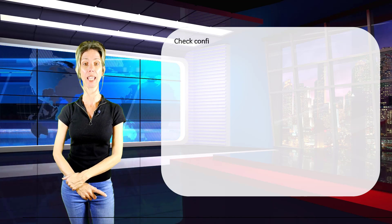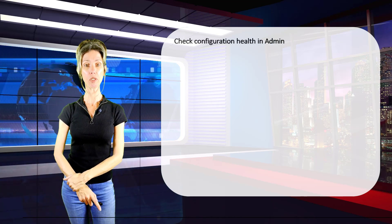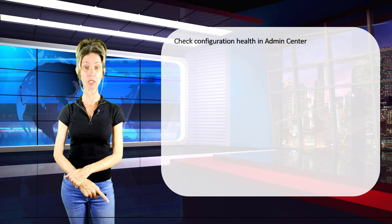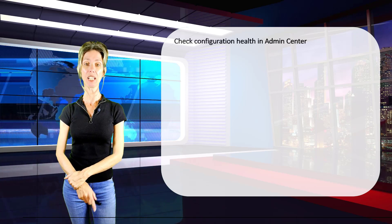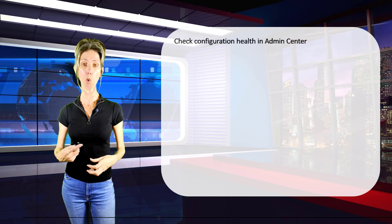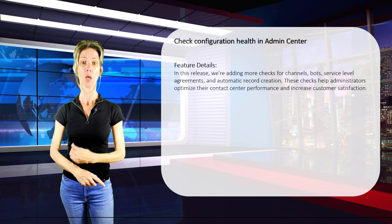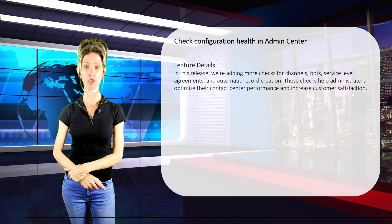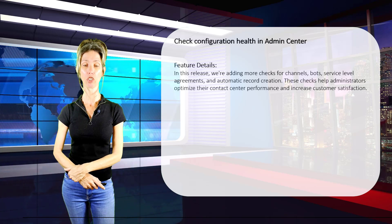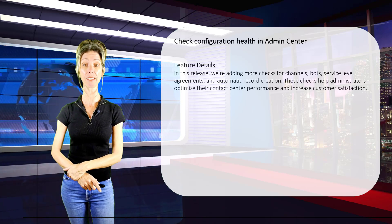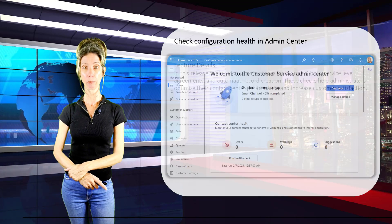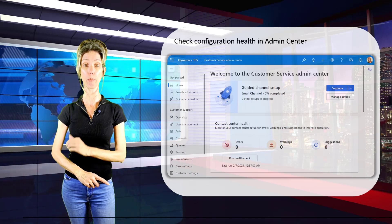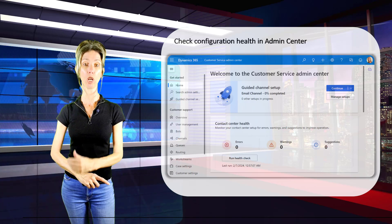The first one I wanted to talk about is the Check Configuration Health in the Admin Center. This was a feature that was actually added last Release Wave — I have to be honest, I kind of missed that one. In this release there are going to be more checks performed when you're running this configuration health check inside of the Admin Center of Customer Service. You can access it by navigating to the home screen in the Admin Center, and that's where you'll see the button that allows you to run that health check.